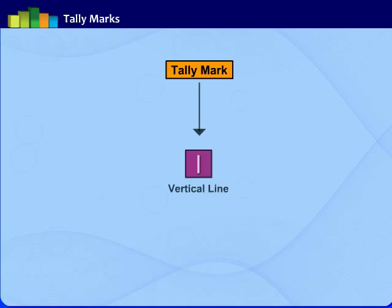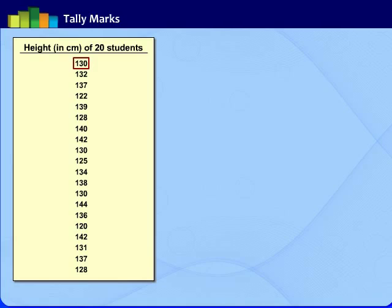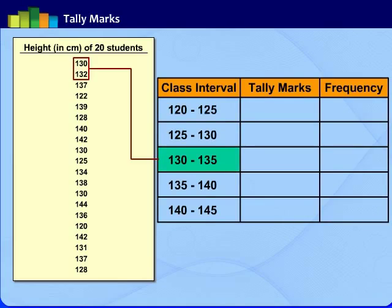A tally mark is a vertical line used for marking while calculating larger data. Let us learn it with previous example. Here the height 130 cm, 132 cm belongs to in class interval, 130 to 135. So, we have to enter two tally marks in beside column, one for each value.